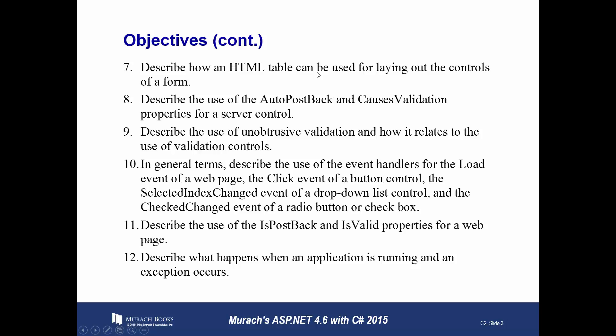We'll create an HTML table in the first example we do as a class, and use that to lay out our controls on a form. We'll describe what auto post back is and what causes validation. We'll look at unobtrusive validation and a couple of event handlers — the load event, click event for a button, selected index changed event for a drop-down, and the check changed event for a radio button or check box.